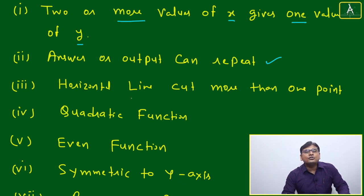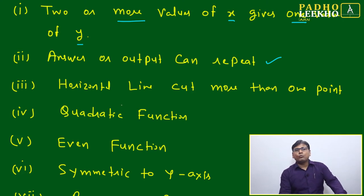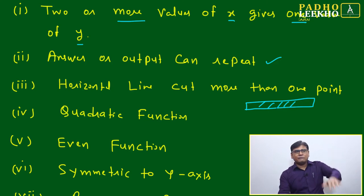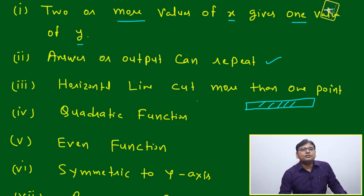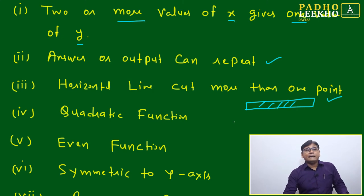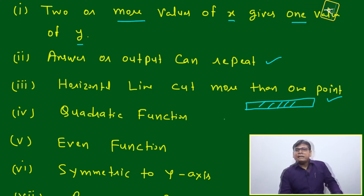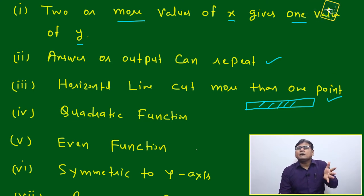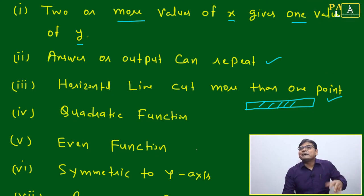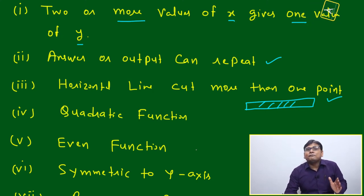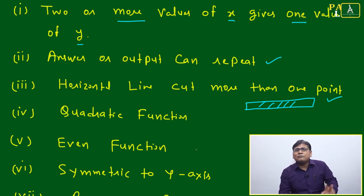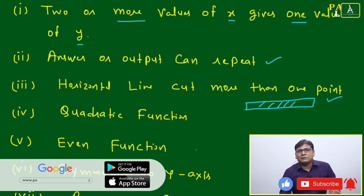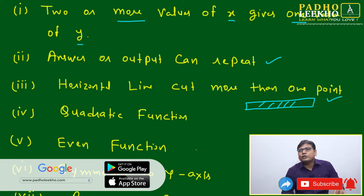Next is the horizontal line test. Take a horizontal bar and slide it over the graph from top to bottom or bottom to top. If the horizontal line cuts the graph at more than one point, we can say it is a many-to-one function. Note that we are not taking the vertical line test here — we are only using the horizontal line test.